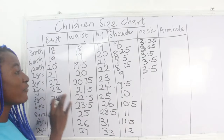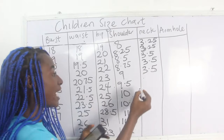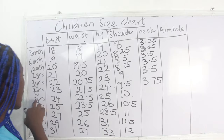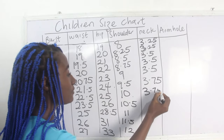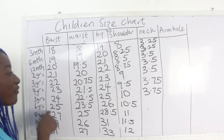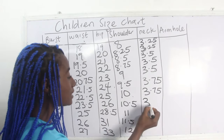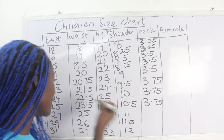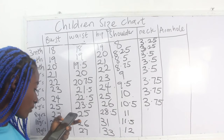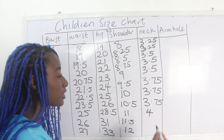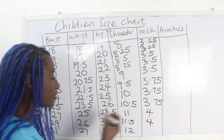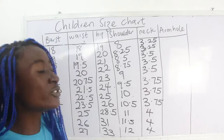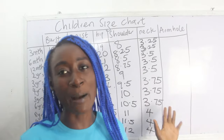For four years: neckline is 3.75 inches. For five years: 3.75 inches. For six years: 3.75 inches. For eight years: 4 inches. For 10 years: 4 inches. For 12 years: 4 inches. These are the neckline measurements to consider for your children's size charts.